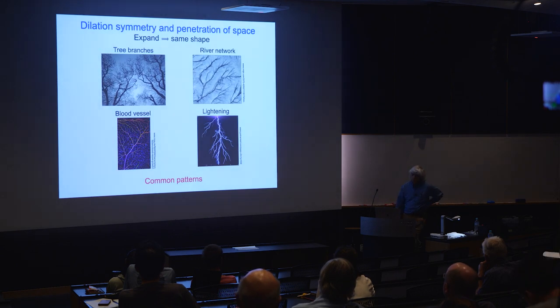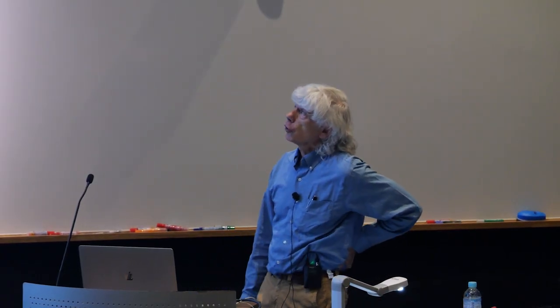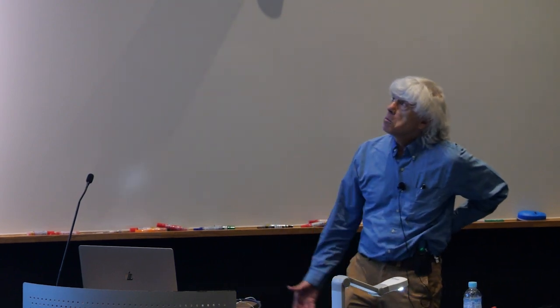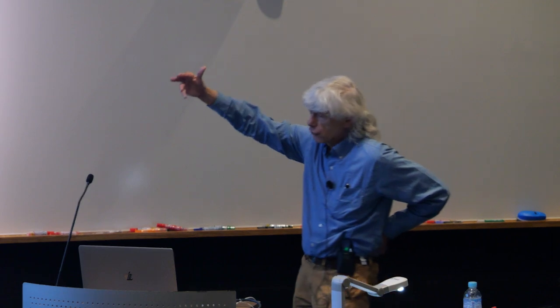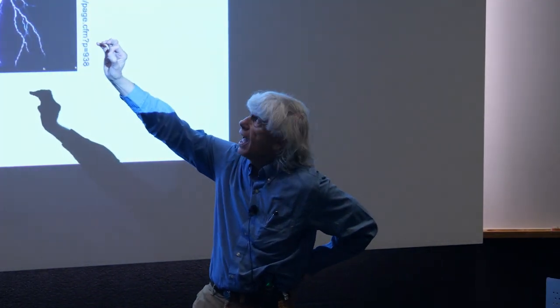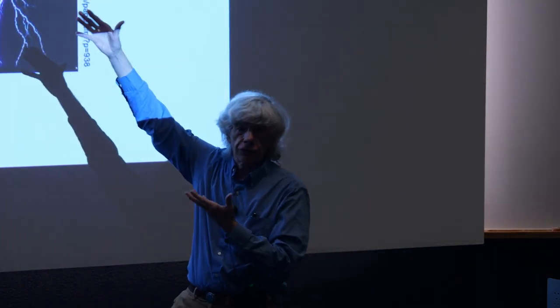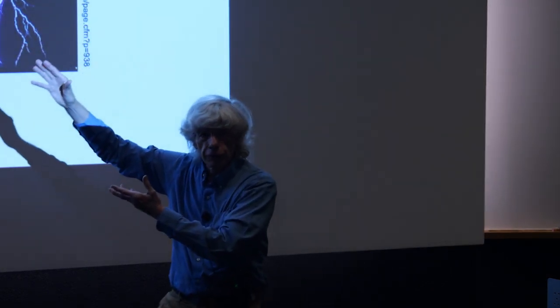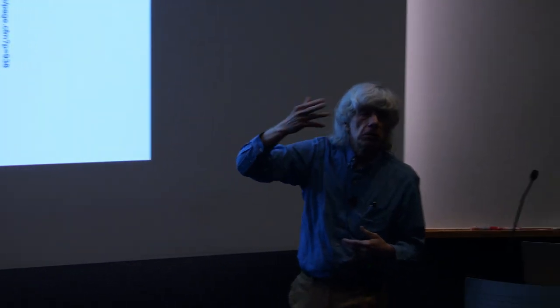I'm going to start with one kind of structure formation: dilation symmetry and penetration of space. You see this in many different guises. Take a tree pattern, look at it closely — if you expand a small part back out to the size of the whole photograph, you're not sure whether you're looking at a small part or the larger tree. They're similar at different scales. The same applies to a river network — finer and finer rivulets as you look closer — and also to blood vessels and lightning strikes.